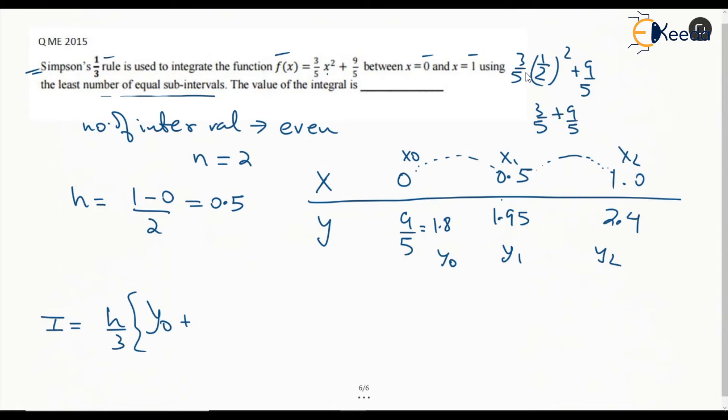We have to substitute the values. h is equal to 0.5, so this is going to be 0.5/3 times [y₀ which is 1.8 plus 4 times 1.95 plus y₂ which is 2.4]. Overall this is going to be 2, so this is the answer using Simpson's one-third rule.